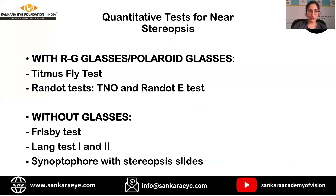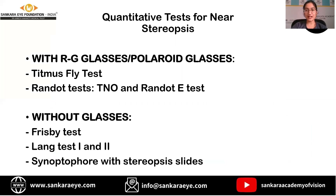Quantitative tests for near stereopsis can be done with red-green glasses, polaroid glasses, or without any glasses. Tests done with glasses include the Titmus fly test and the Randot test, whereas tests that can be done without any glasses are the Frisby test, Lang test 1 and 2, and the synaptophor test. All of these tests are done with refractive correction, including near correction if any, in place.